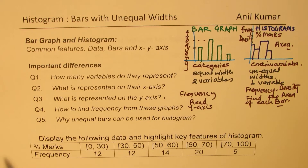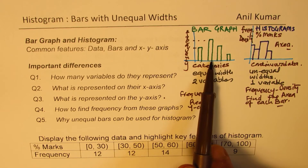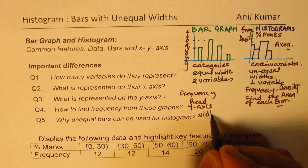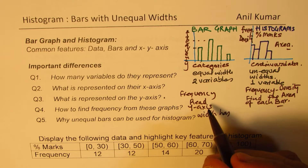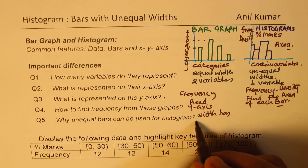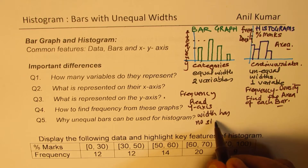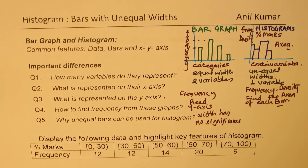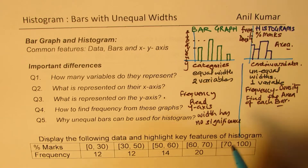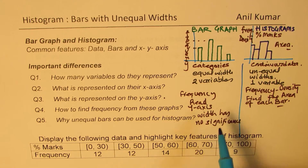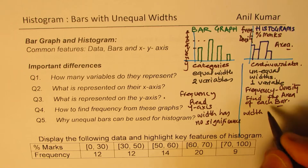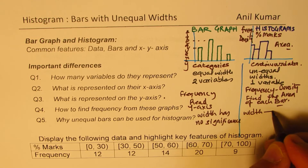Now you understand why we can have unequal bars in a histogram, but in a bar graph the width has no significance — you could make them equal or unequal, width has no significance. In a histogram, width relates to area — width and height together — and therefore you could have different combinations depending on the density.